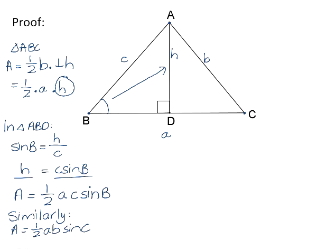Because if you look at the pattern, little a, little c, sine of the big angle. So little a, little b will be sine of the big angle C. And we can say that A is equal to a half of BC sine of A. And that is the area rule.